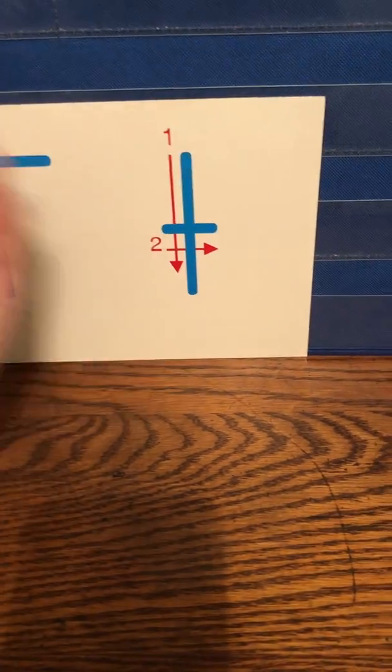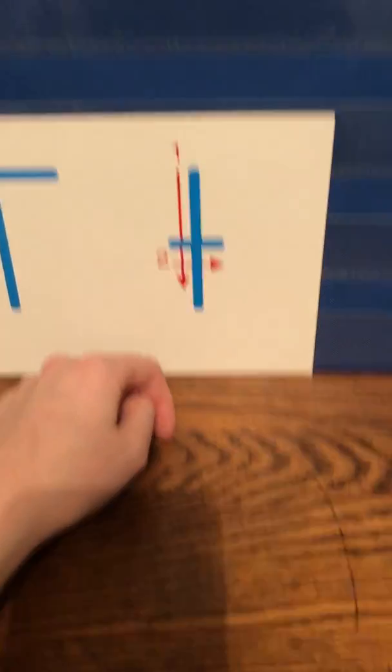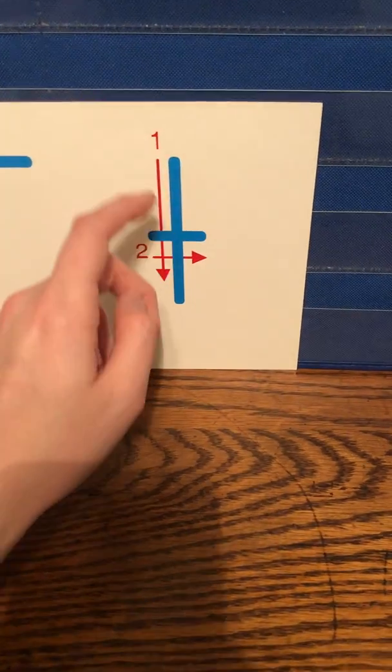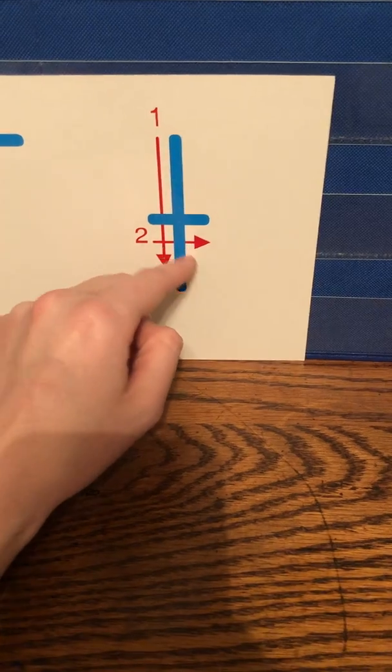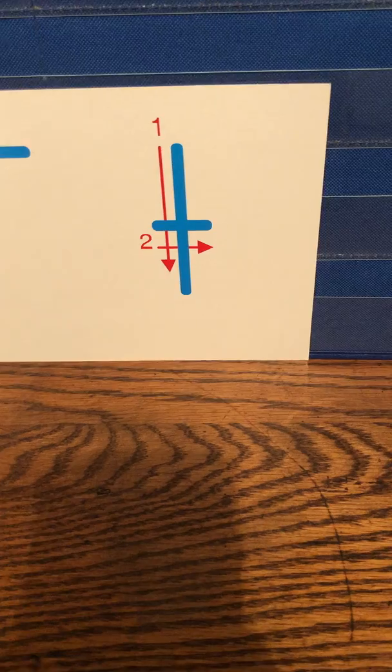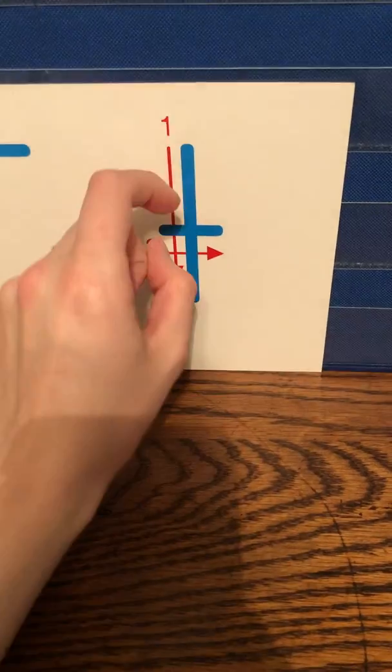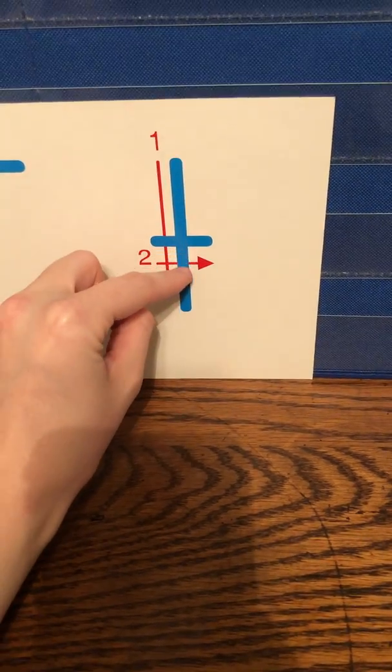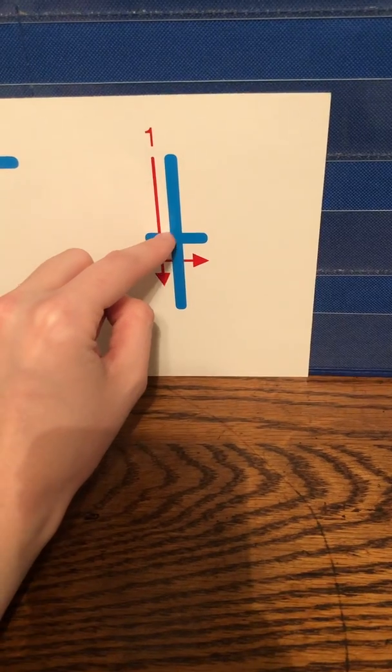It kind of looks like a cross, but here in this case we're calling it the letter T. So you just do a line down and a short line across. A short line. It's a small letter. It's lowercase, so we don't need a very big line. A line down and a small line across.